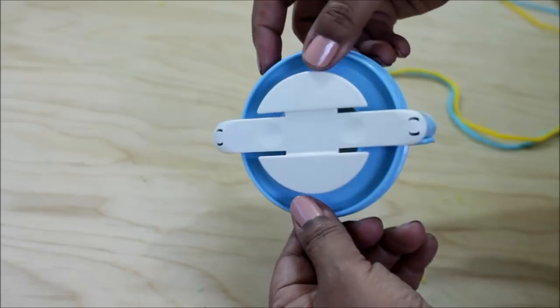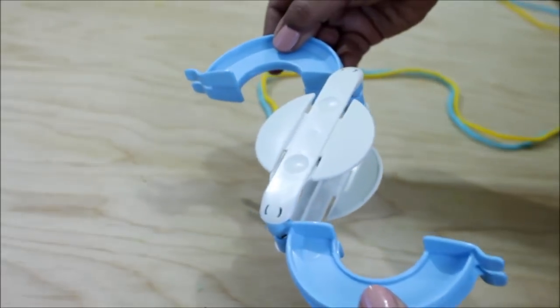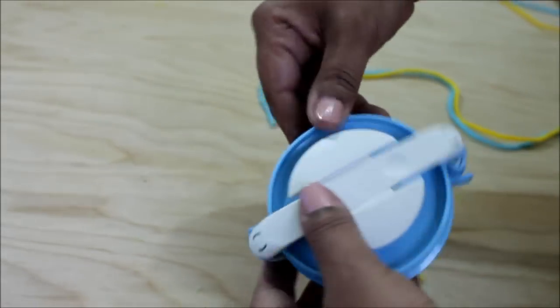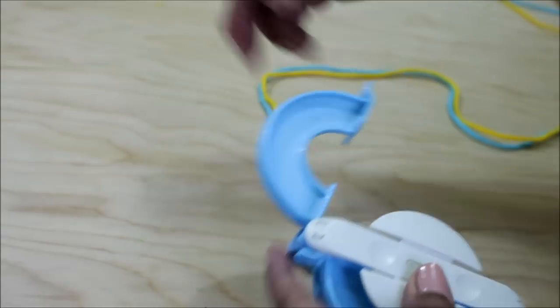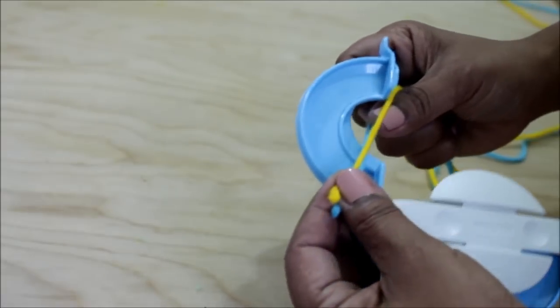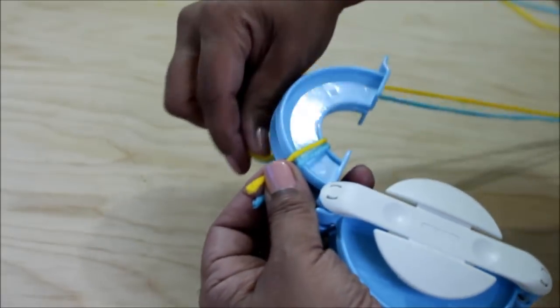So the clover is the same on both sides so you don't have to worry about which side you choose. Just pick one and flip this, I call them hooks, open. Take your two colors of yarn strands and then just start wrapping.